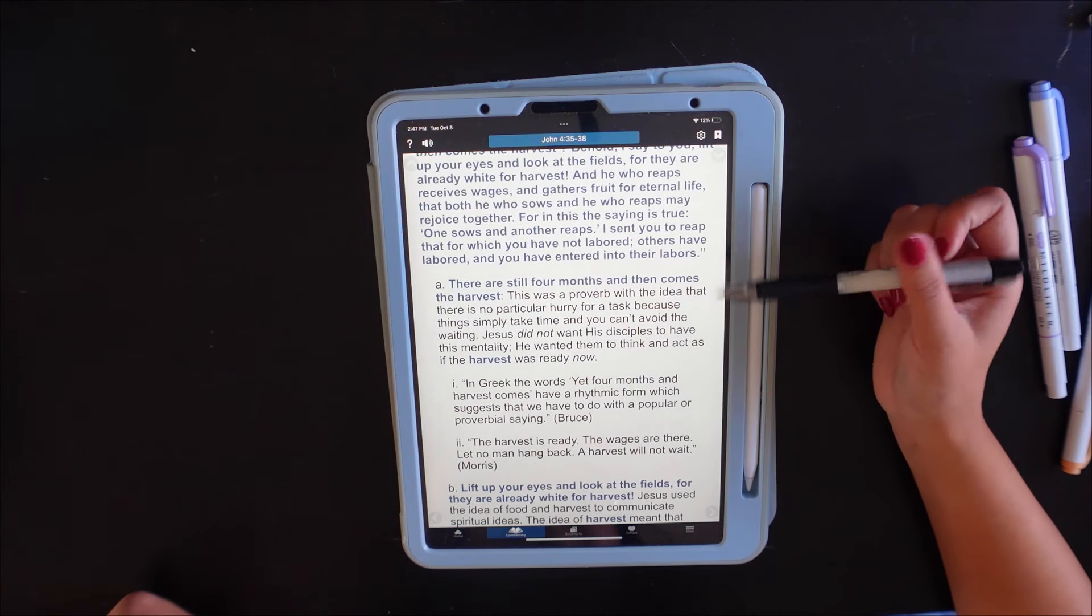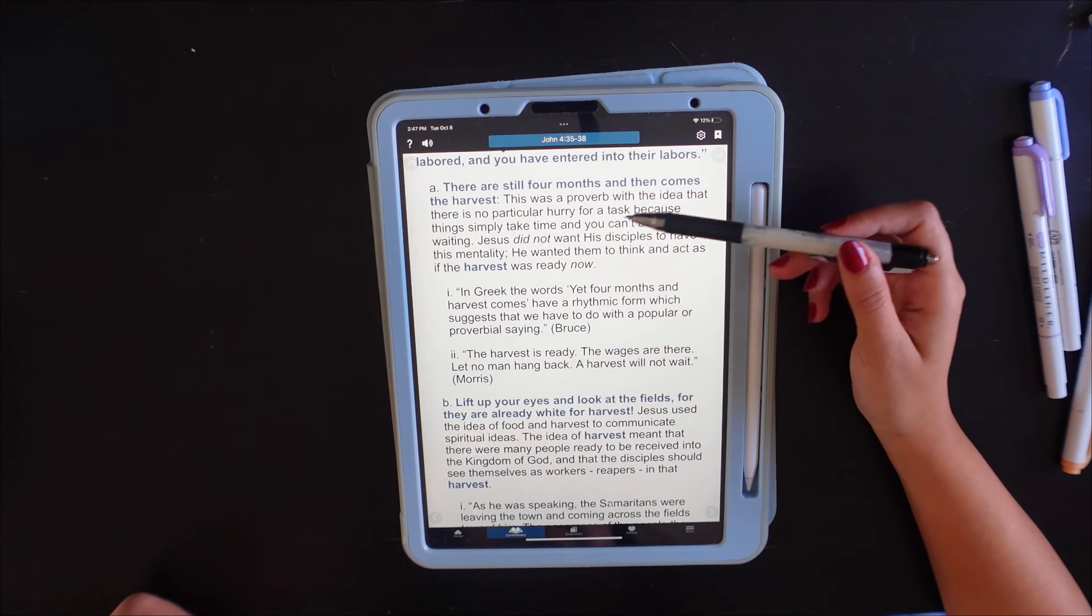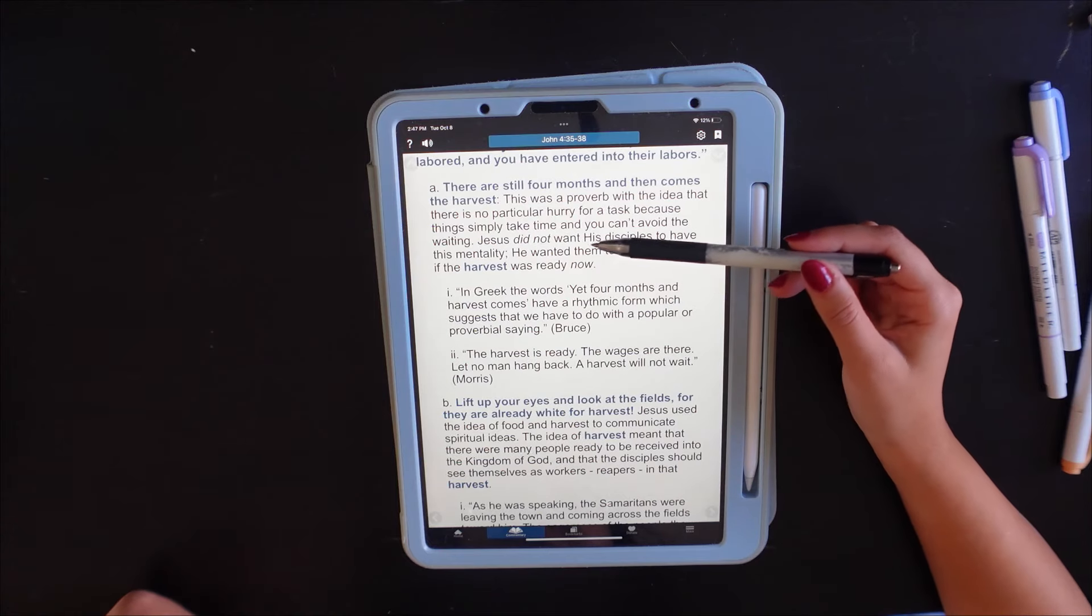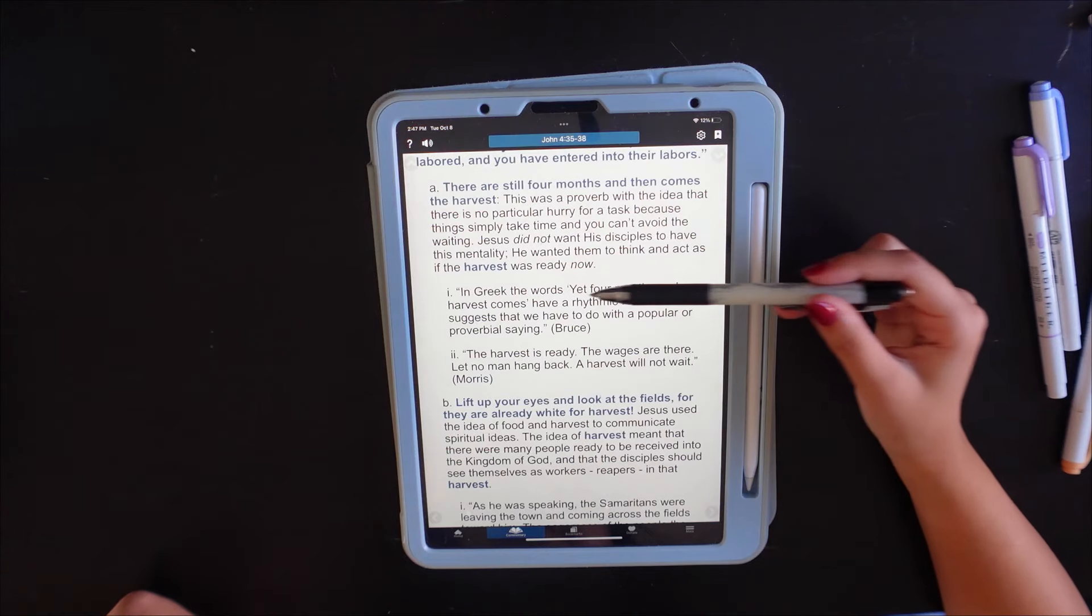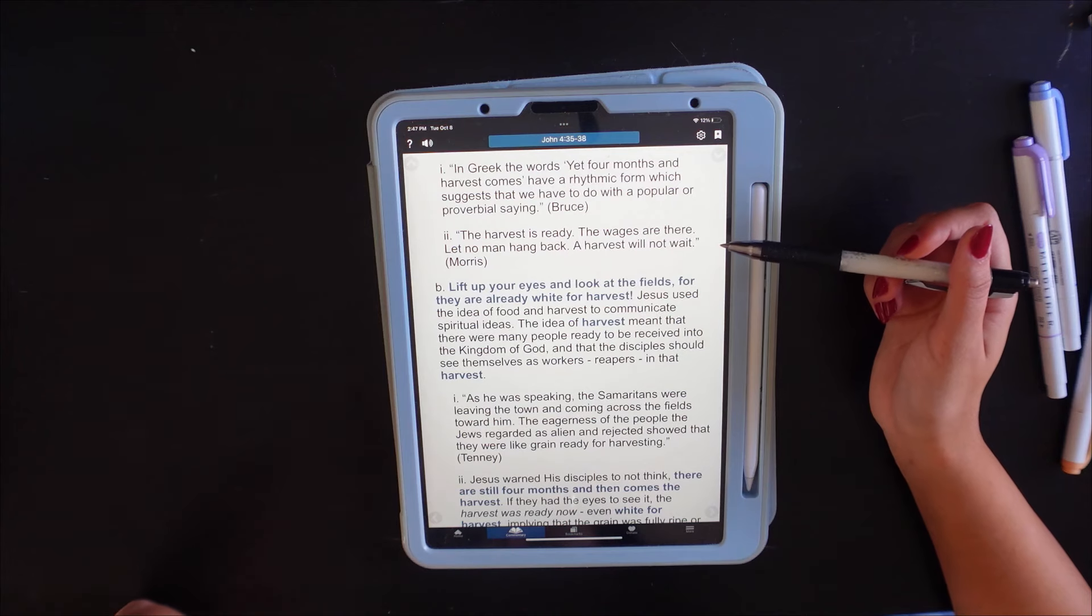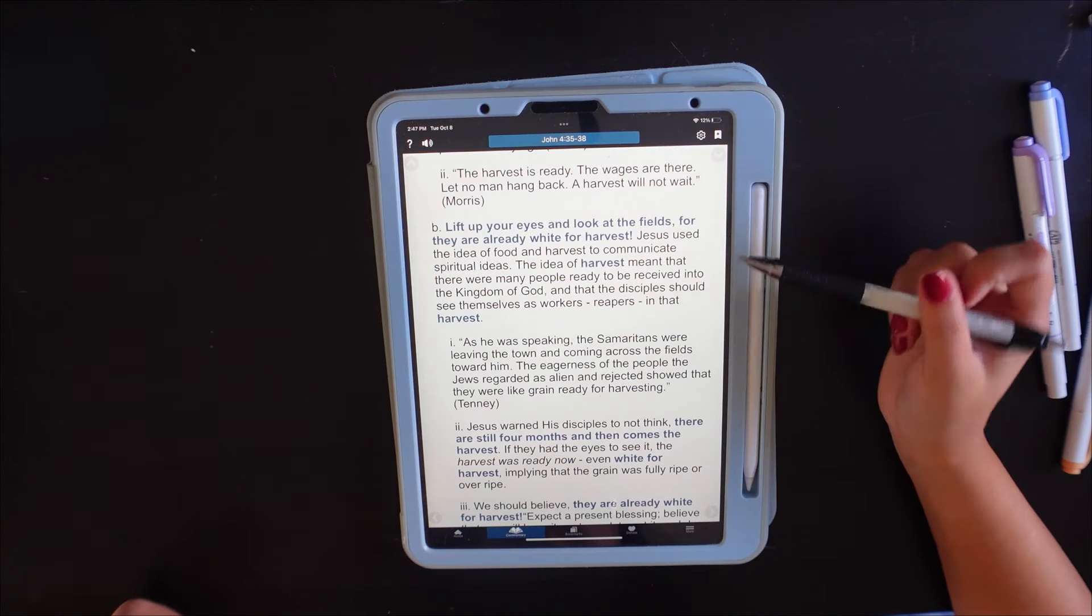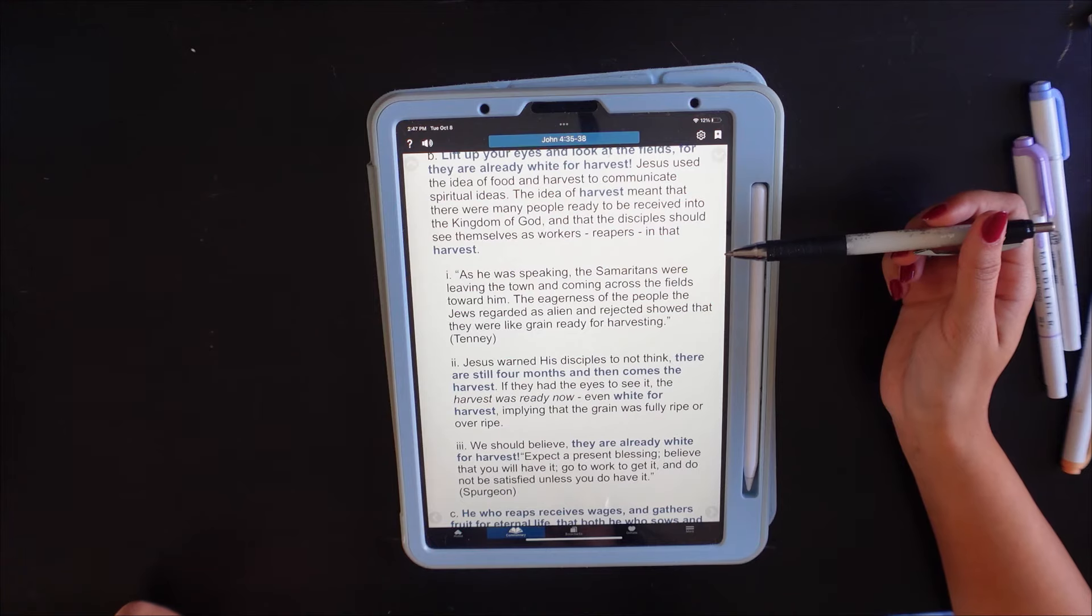There are still four months and then comes the harvest. This was a proverb with the idea that there is no particular hurry for a task because things simply take time and you can't avoid the waiting. Jesus did not want his disciples to have this mentality. He wanted them to think and act as if the harvest was ready. Now the harvest is ready. The wages are there. Let no man hang back. A harvest will not wait. Jesus used the idea of food and harvest to communicate spiritual ideas. The idea of harvest meant that there were many people ready to be received into the kingdom of God and that the disciples should see themselves as workers and reapers in the harvest.